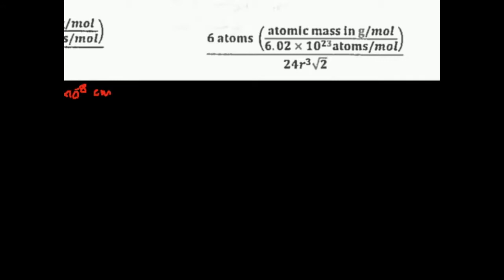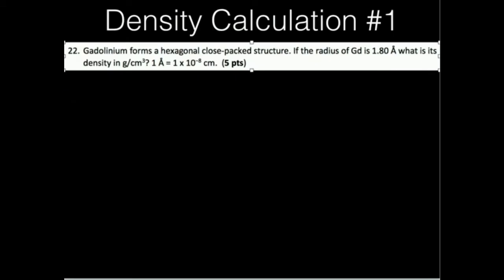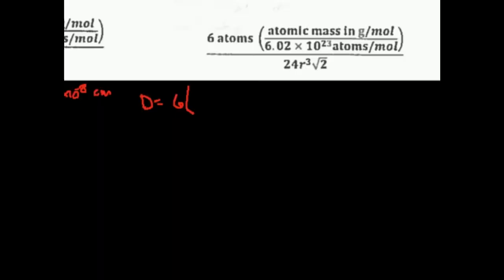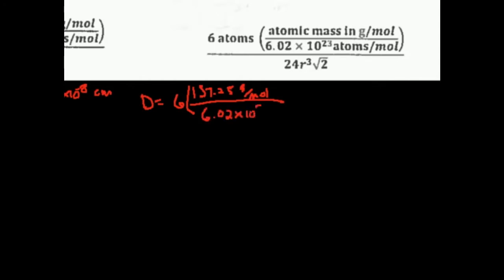Our density is going to be 6 times the atomic mass. The molecular weight of GD is 157.25 grams per mole, divided by 6.02 times 10 to the 23rd atoms per mole.